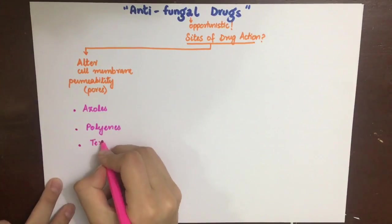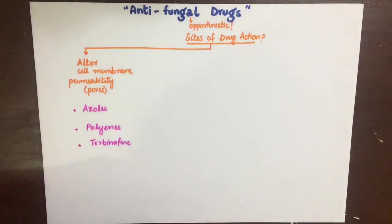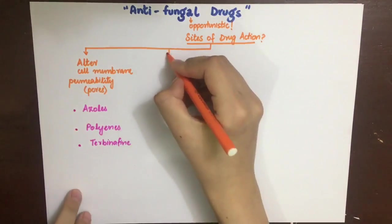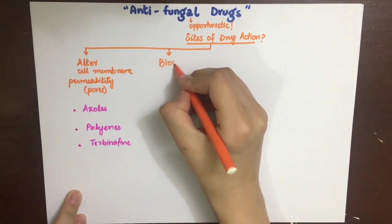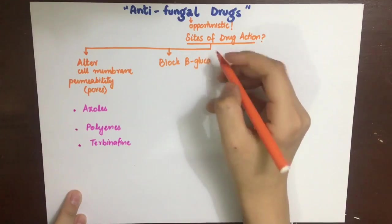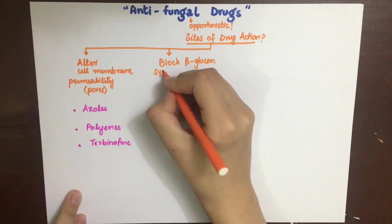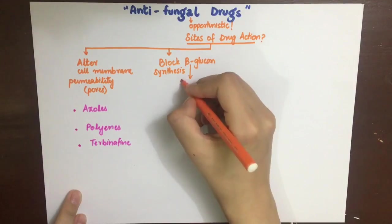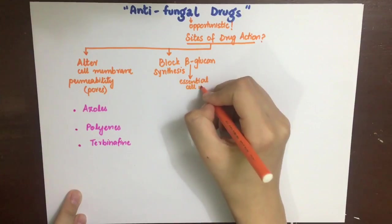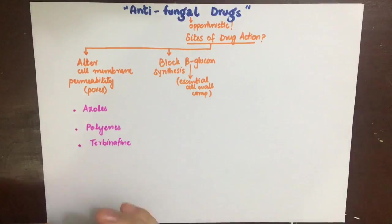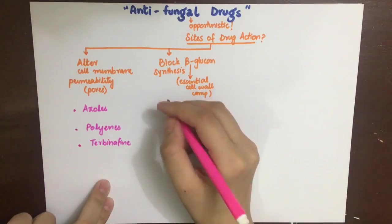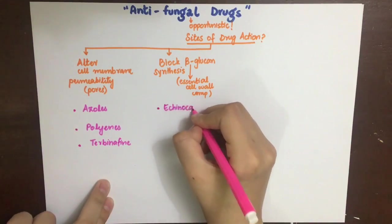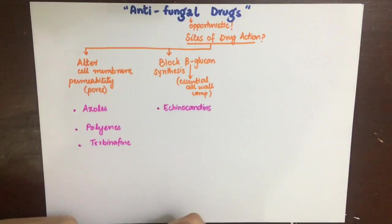Other drugs block beta-glucan synthesis in the cell wall of the fungus, which is an essential component for cell wall synthesis. These drugs include echinocandins, the drugs that end with fungins.